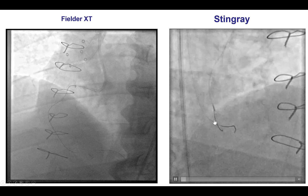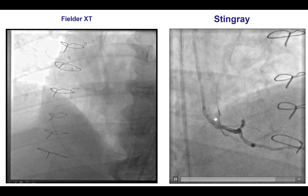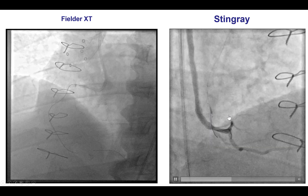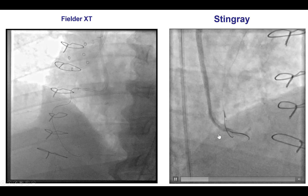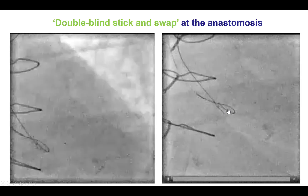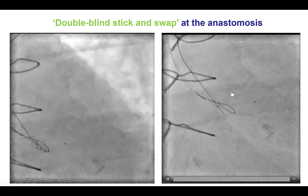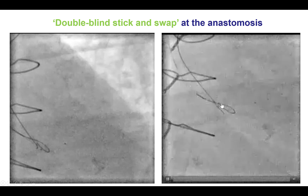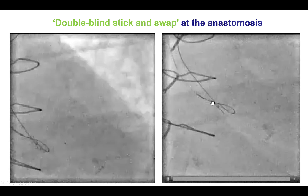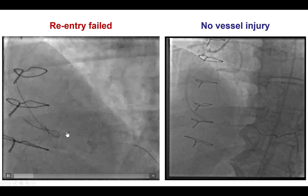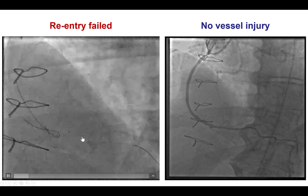The initial re-entry was proximal to the touchdown of the saphenous vein graft. We can see the two markers of the Stingray balloon with the guide wire exiting proximal to the proximal marker; however, re-entry attempts there were not successful. We advanced the knuckle further down, literally at the touchdown of the SVG, and repeated re-entry attempts using the double-blind stick-and-swap technique, using the wire seated in the vein graft as a marker of where the true lumen would be. Unfortunately, despite those attempts, it was not possible to re-enter into the distal true lumen.